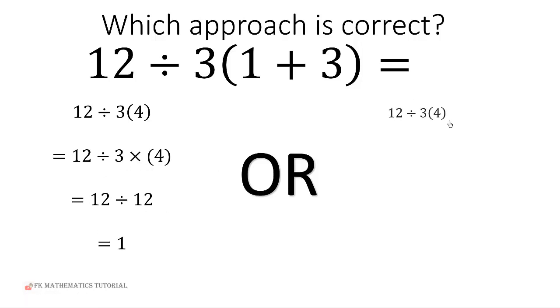With the second approach, the order of operations is used - BODMAS or PEMDAS. After we get here, it's like this 3 is multiplying the 4.